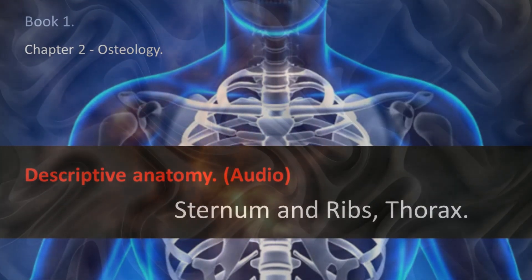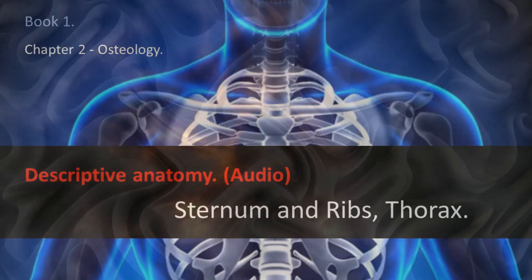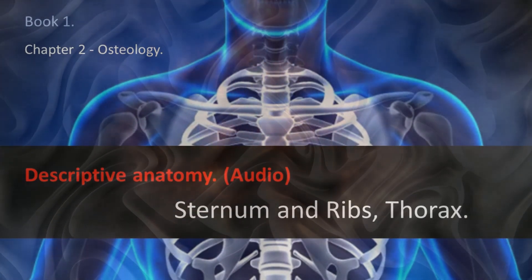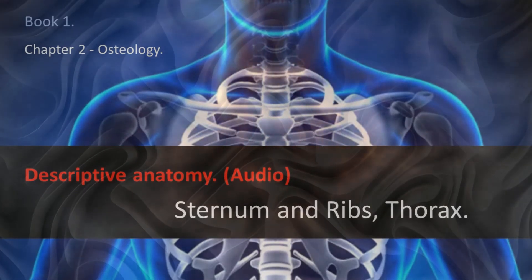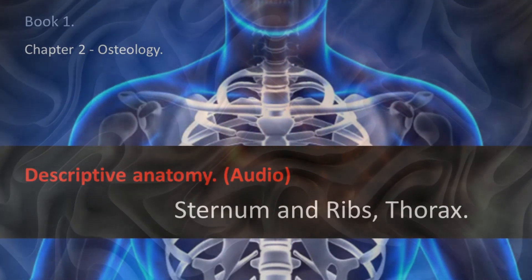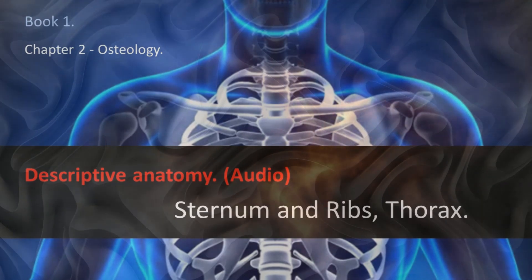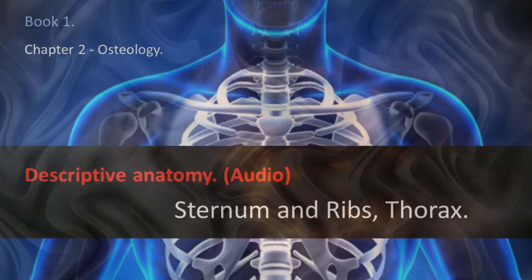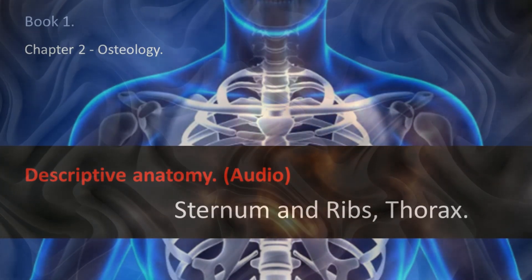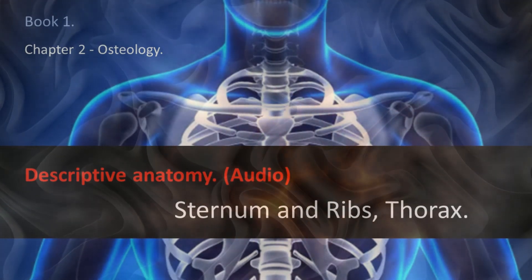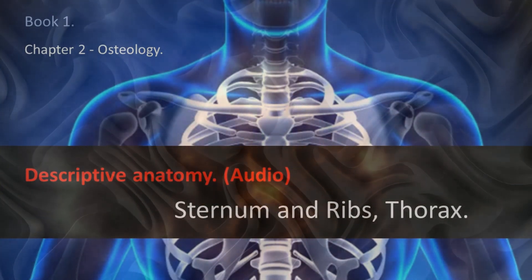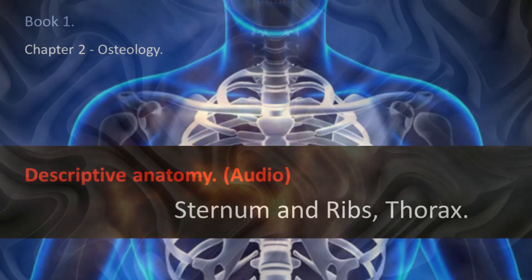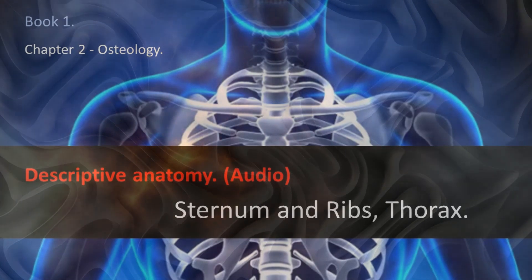Thorax in general. The thorax is a bony and cartilaginous cavity in which the lungs and heart are housed. It has the figure of a truncated cone with a lower base. Its height is 15 centimeters in front, 27 centimeters behind and 32 centimeters on the sides. For its description we can consider: the outer surface, the inner surface, base and vertex.